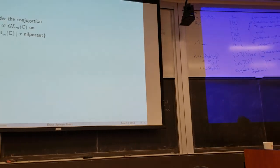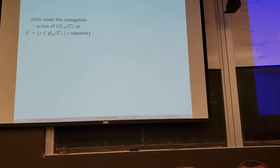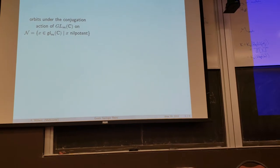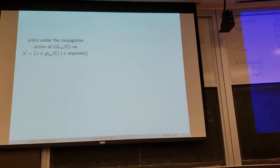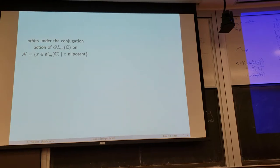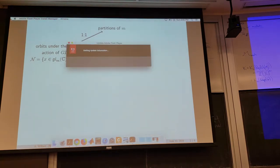I want to start with something that most of you probably know. I'm going to study nilpotent n by n matrices, and there's an action by the general linear group on that, simply by conjugation. I want to look at the orbits, and there's a simple way to parameterize them. In this case, they are in bijection simply with partitions of M.